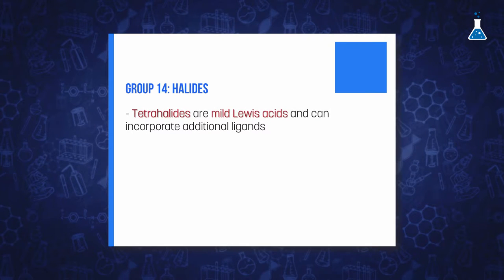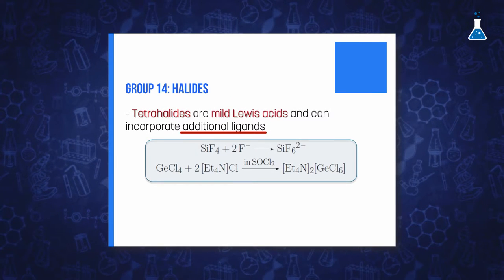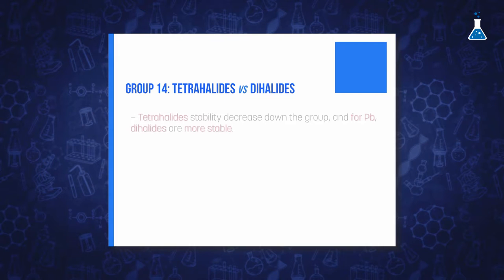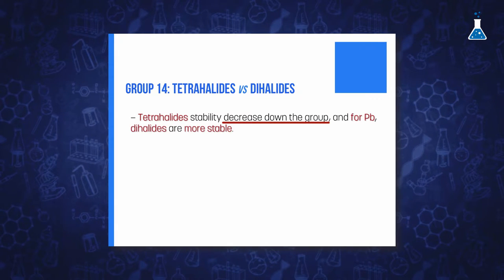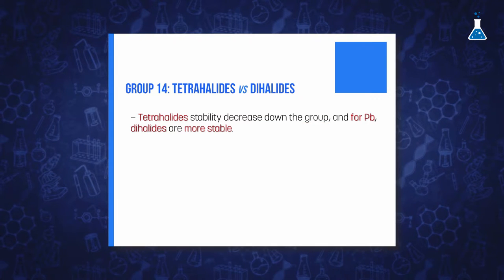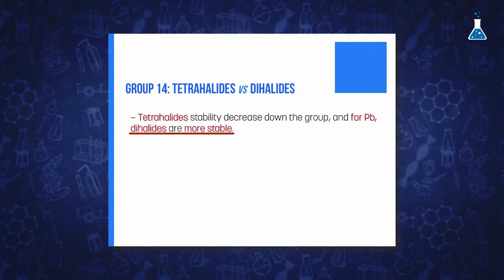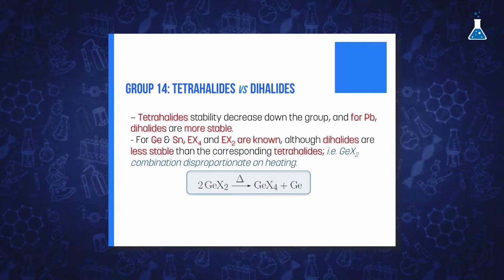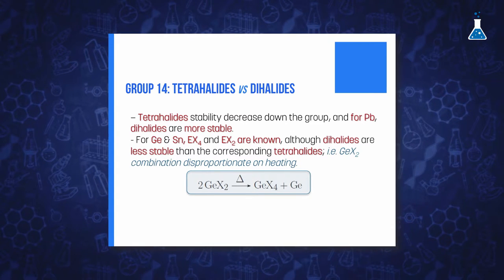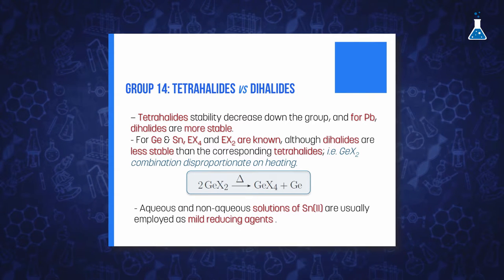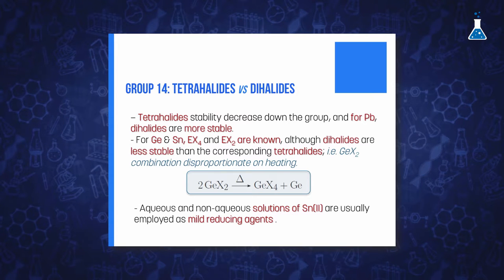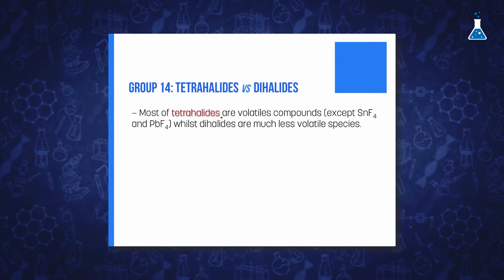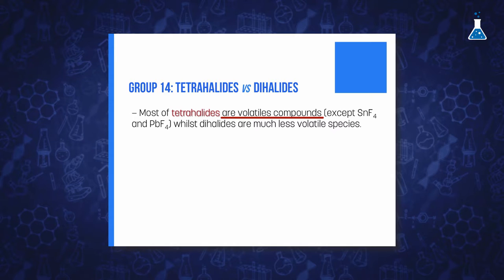Furthermore, all tetrahalides can incorporate additional ligands, given their Lewis acidity, to form five- or six-coordinated complexes. The stability of tetrahalides decreases on descending the group. For example, in the case of lead, dihalides are more stable than tetrahalides. Germanium and tin dihalides are also known, although they are less stable than the corresponding tetrahalides. Aqueous and non-aqueous solutions of tin(II) salts are usually employed as mild reducing agents. Most tetrahalides, with the exception of tin or lead tetrafluoride, are volatile molecular species with tetrahedral structure.